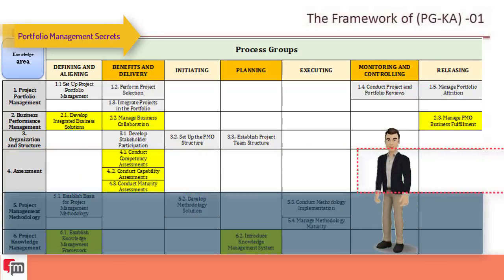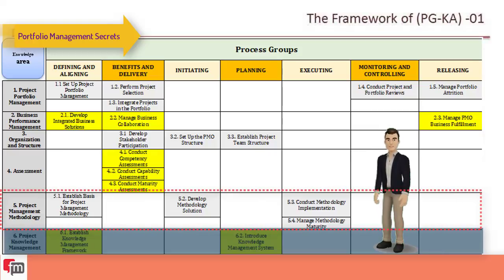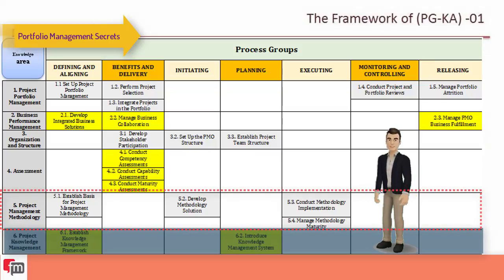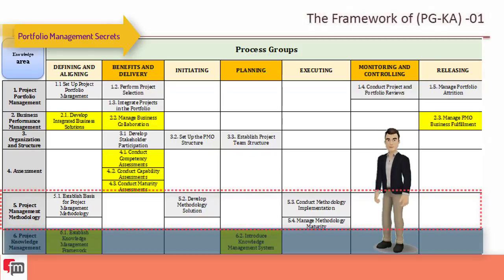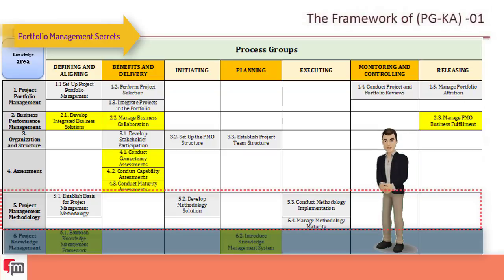The fifth knowledge area is the role of project management methodology. A project management methodology provides a standard, predictable process to guide project performance from concept to completion. There are four processes: establish the basis for project management methodology, develop methodology solution, conduct methodology implementation, and manage methodology maturity.